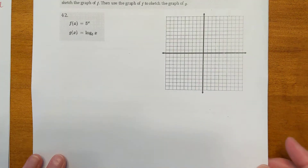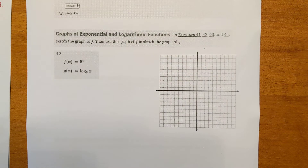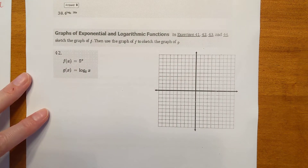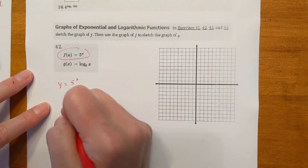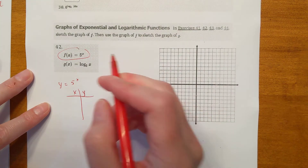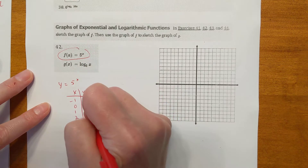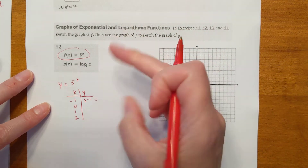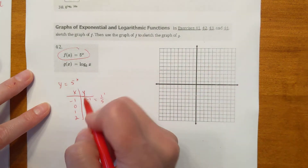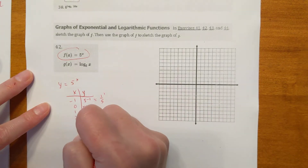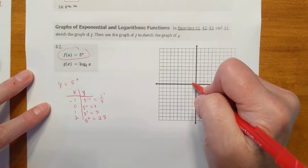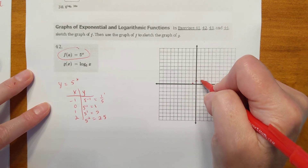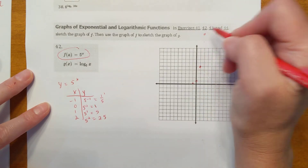On the back page it says: graphs of exponential and logarithmic functions — sketch the graph of f and use that to sketch the graph of g. So we're going to graph y equals 5 to the x. Plug in numbers around 0: negative 1, 0, 1, 2. Five to the negative 1 flips to 1/5. Five to the 0 is 1 — anything to the 0 is 1. Five to the 1st is 5, and 5 to the 2nd is 25. So at negative 1 it's 1/5, at 0 it's 1, at 1 it's 5, and at 2 it's 25.